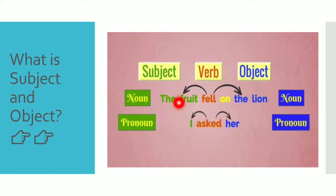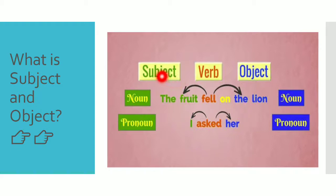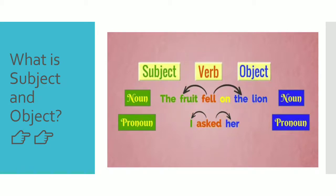For example, the sentence 'The fruit fell on the line' — here 'fruit' is a noun, 'lion' is a noun, and 'fell' is the verb. The doer of the action becomes the subject. Here, who is performing the action? The fruit — because it is falling. So 'the fruit' is the subject.